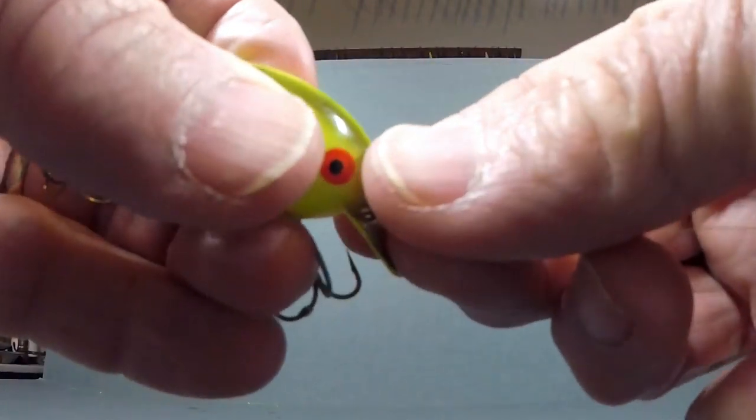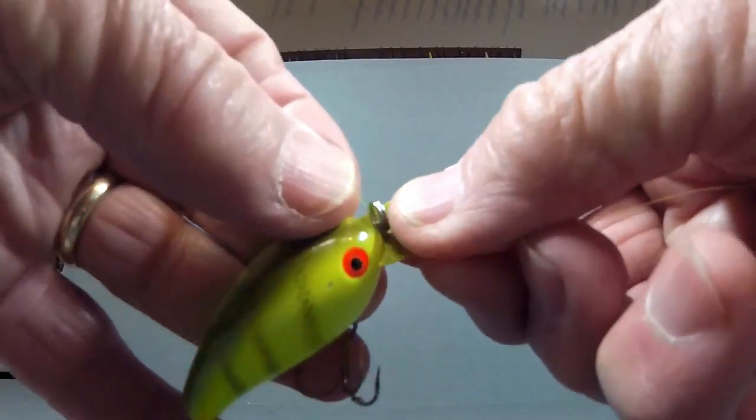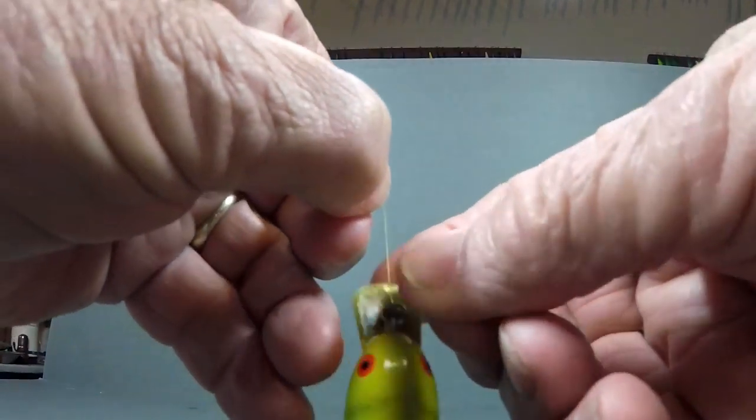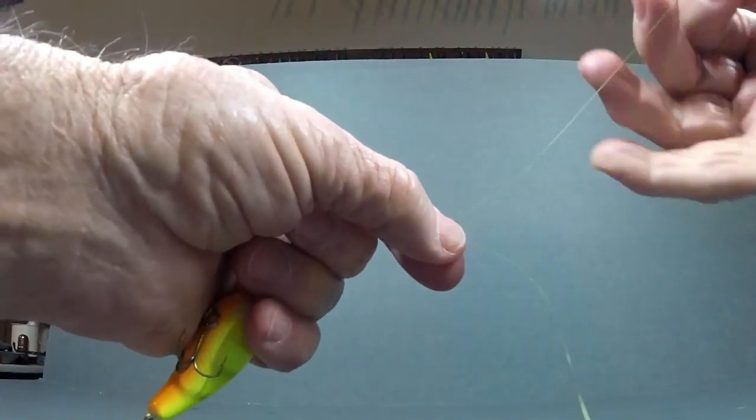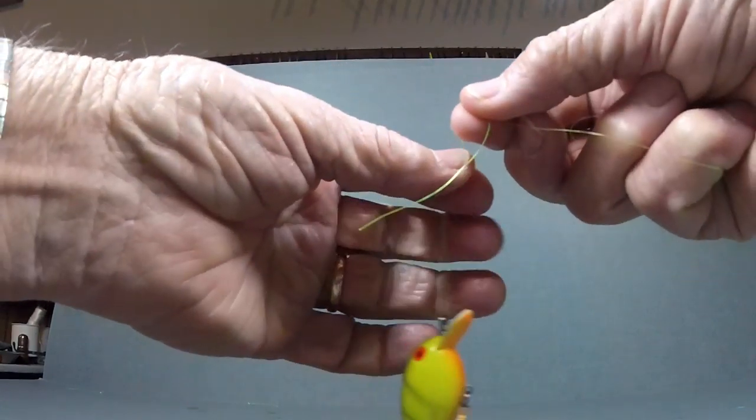Notice that when we use this method, instead of wrapping the tag line around the main line, we wrap the main line around the tag line by spinning it.